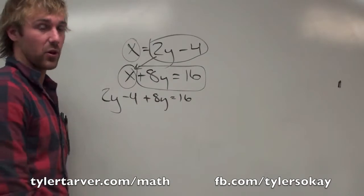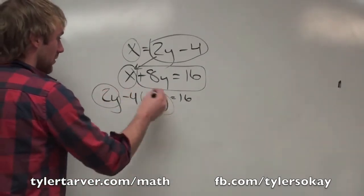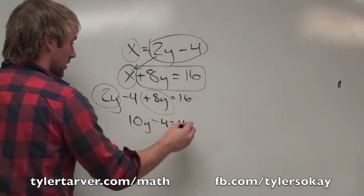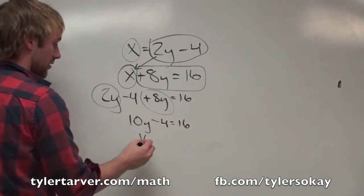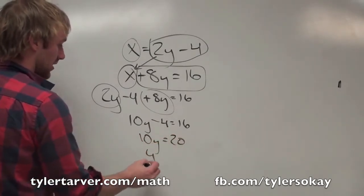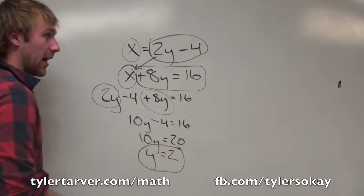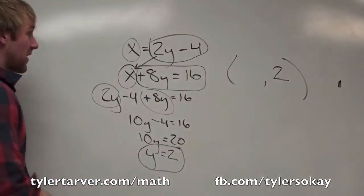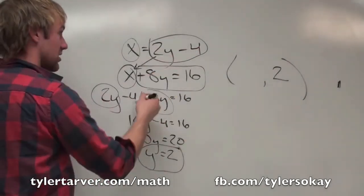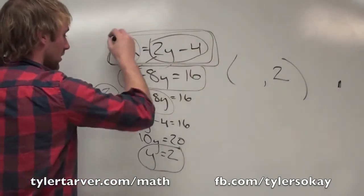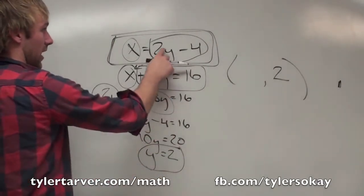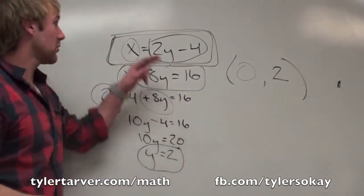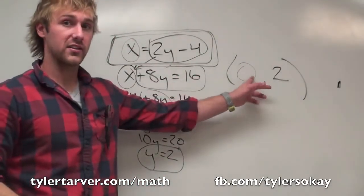Now I'm just solving multi-step equations. Combine the like terms: 2y plus 8y is 10y, still minus 4. Add 4 to both sides, then divide by 10 — and I've got my y equals 2. To find x, plug 2 in for y into the easier equation: x equals 2 times 2 minus 4, which is 4 minus 4, equals 0. So these two lines cross at the coordinate (0, 2).